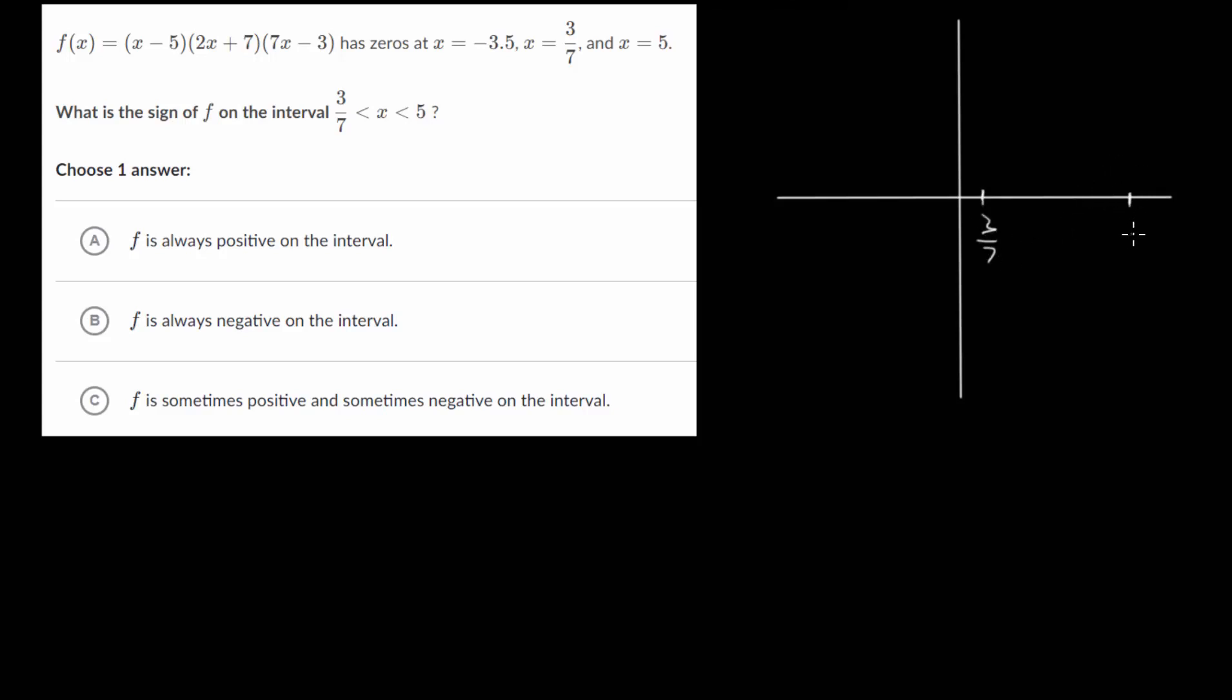It goes through at 5, and this is not going to be perfectly to scale but we can get a rough idea, and that's at -3.5. So our function f(x) is going to go through the x-axis at these points. That's what we mean by zeros here.